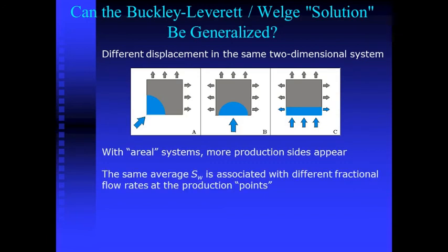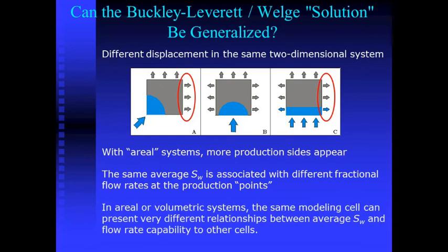And second, that, depending on how the water is injected, different links may appear between average water saturation and water flow capacity. For example, for a certain average water saturation, the end side indicated in diagram A has a fractional flow of water equal to zero, while the same end side, with the same average water saturation, in scheme C has a fractional flow different from zero. In other words, the same average water saturation can be associated with different fractional flows at any of the production ends that we choose.